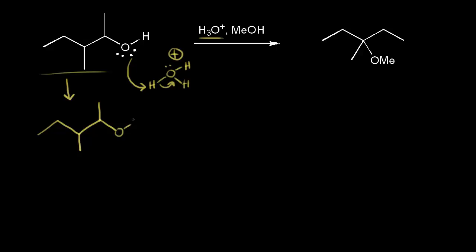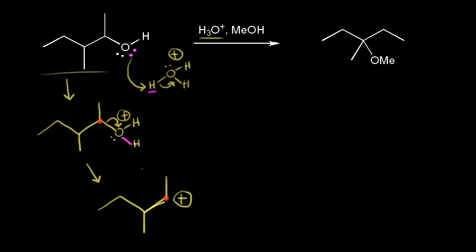That gives us a plus one formal charge on this oxygen, with still one lone pair of electrons remaining. That lone pair picked up the proton to form this bond. Now we are ready for loss of a leaving group, because when these electrons come off onto the oxygen, that gives us water, and water is a good leaving group. So the second step is loss of a leaving group, and we're taking a bond away from this carbon in red, so that carbon gets a plus one formal charge. The carbon in red is directly bonded to two other carbons, so this is a secondary carbocation.